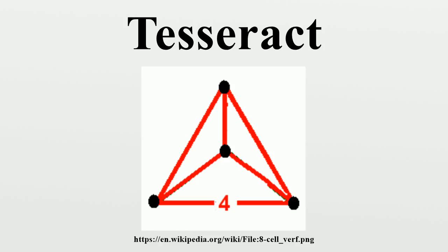The construction of a hypercube can be imagined the following way. One-dimensional: two points A and B can be connected to a line, giving a new line segment AB. Two-dimensional: two parallel line segments AB and CD can be connected to become a square, with the corners marked as ABCD. Three-dimensional: two parallel squares ABCD and EFGH can be connected to become a cube, with the corners marked as ABCDEFGH. Four-dimensional: two parallel cubes ABCDEFGH and IJKLMNOP can be connected to become a hypercube, with the corners marked as ABCDEFGH IJKLMNOP.